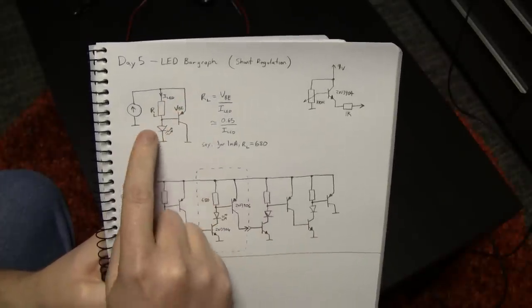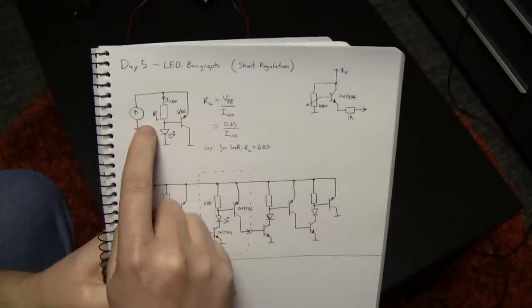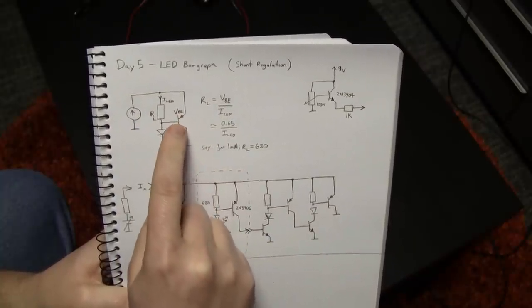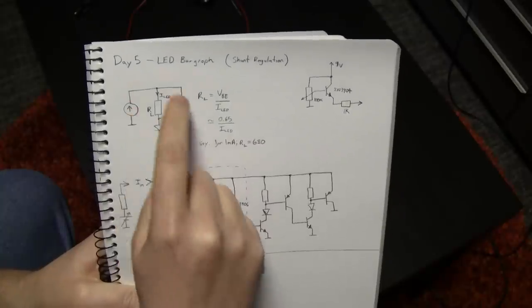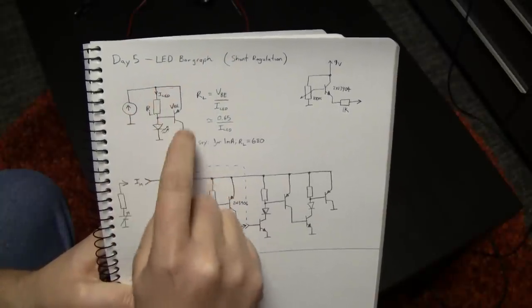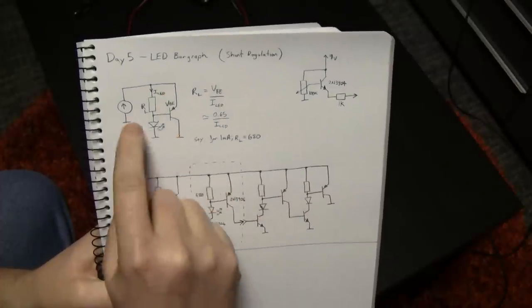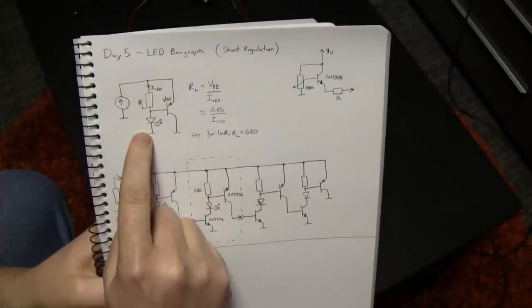In this case, we put a transistor across it such that as the current increases, the voltage dropped across this resistor increases to the point where it exceeds the VBE of this transistor. And this transistor turns on and starts to pull the excess current through and just shunts it to ground. Now in doing that, it protects this arm and the LED from the additional current.